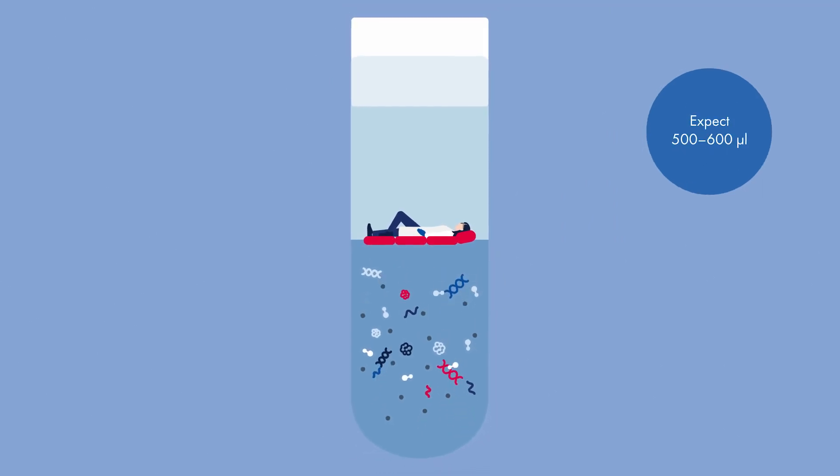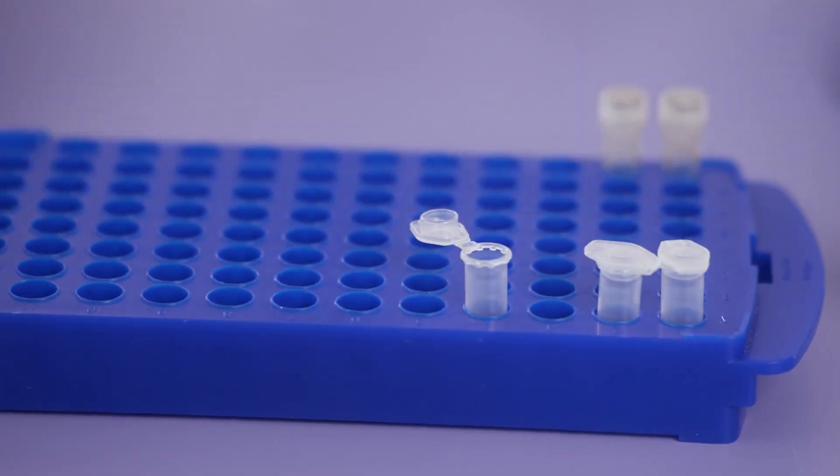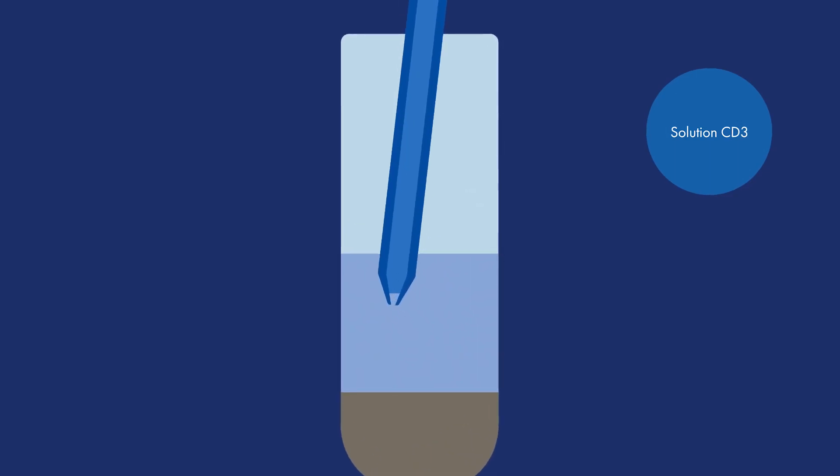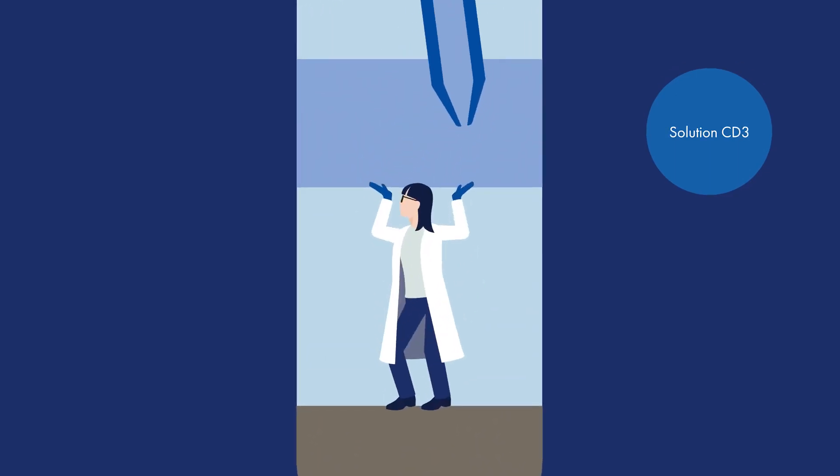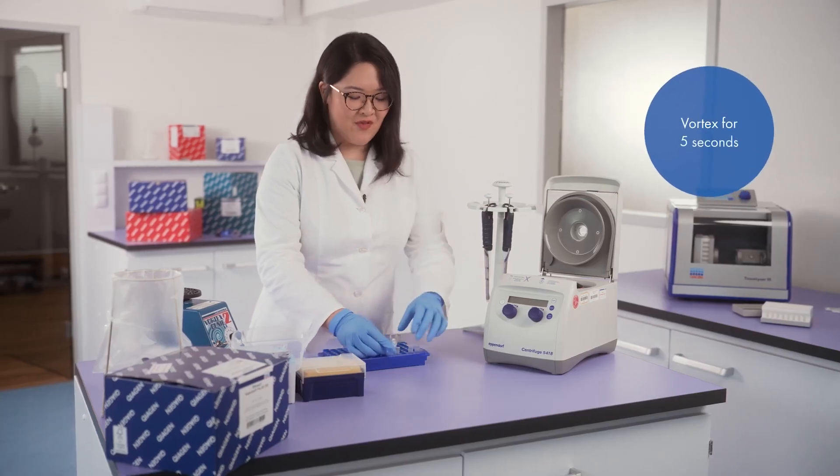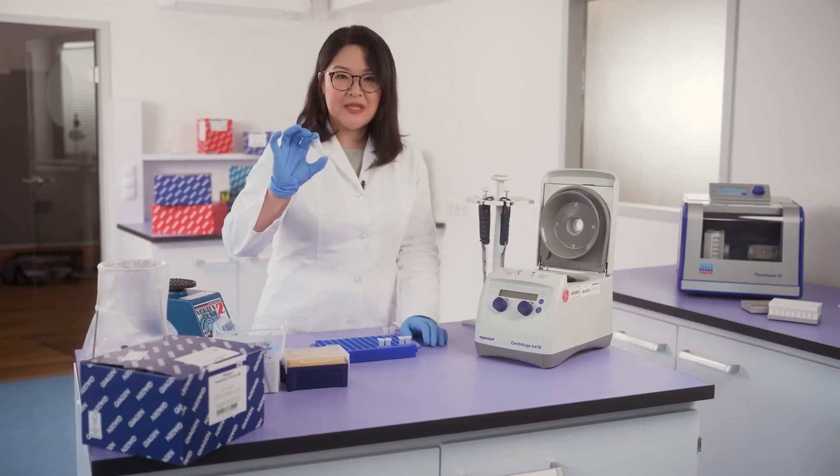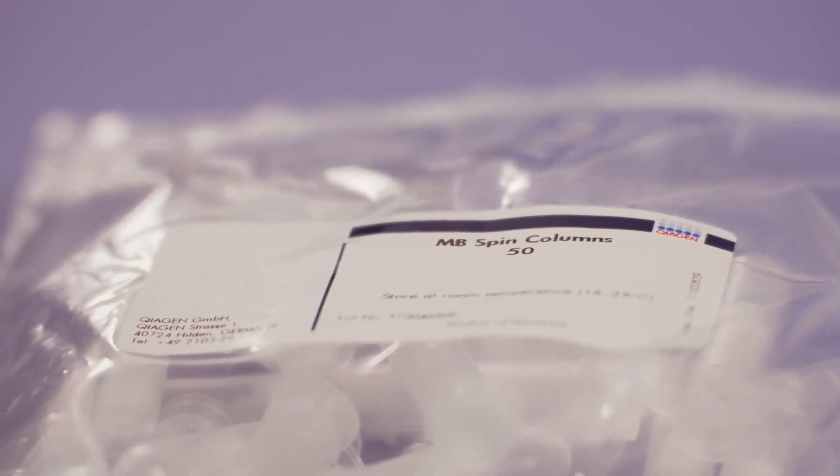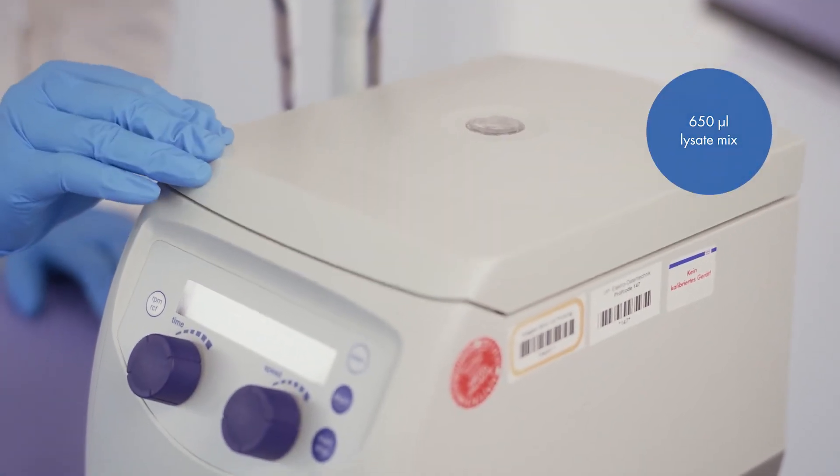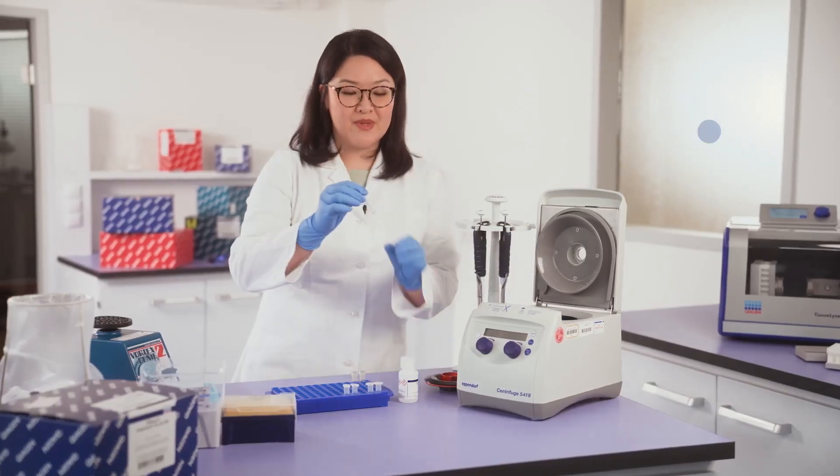Transfer the supernatant into two new collection tubes. Add solution CD3. It will selectively bind DNA onto the membrane of the MB spin column. Make sure to not touch the pellet. Vortex the tubes for five seconds and then load the lysate mixed onto an MB spin column. Centrifuge the tube and discard the flow-through two times to make sure the lysate has passed through the spin column.